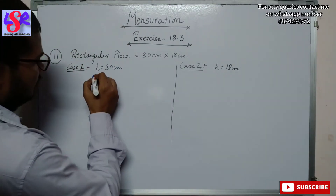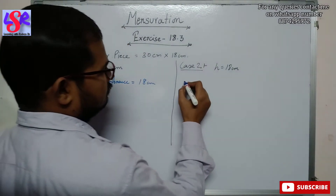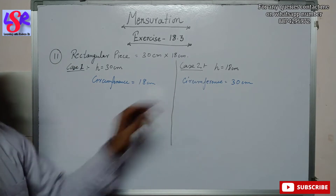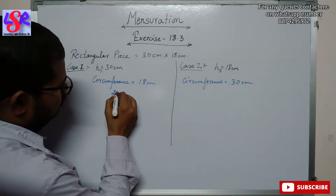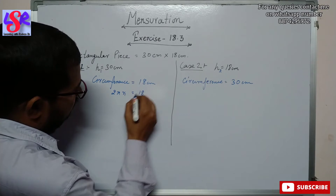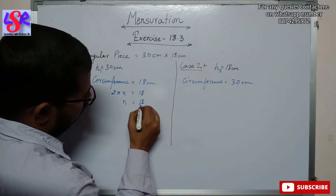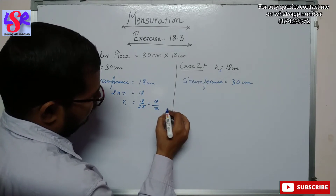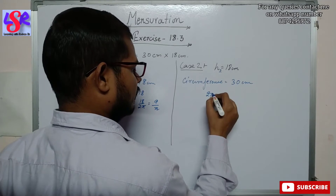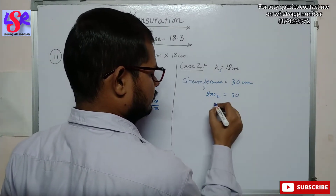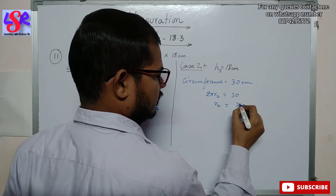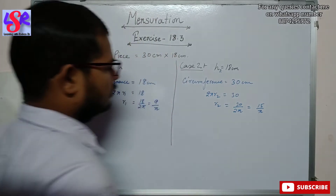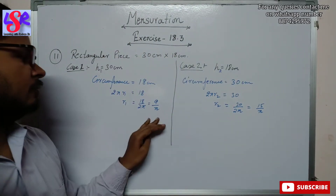So the circumference for the first cylinder equals 18 cm and for the second it will be 30 cm. Using these circumferences we find r1 and r2. We get 2πr1 = 18, so r1 = 9/π. And 2πr2 = 30, so r2 = 15/π. We have now got the values of r1 and r2 in terms of π.